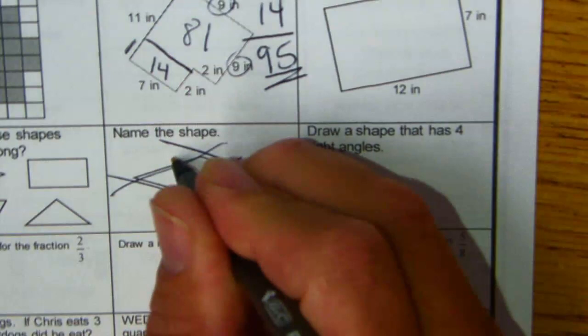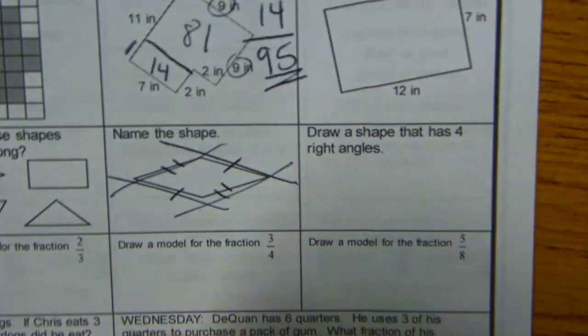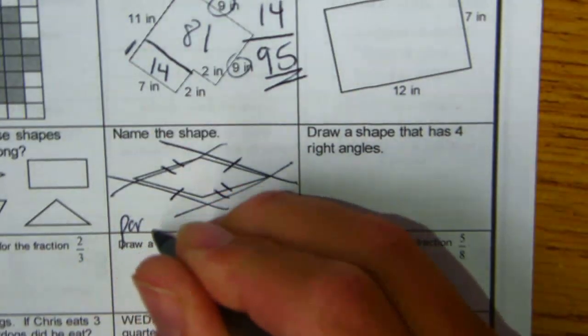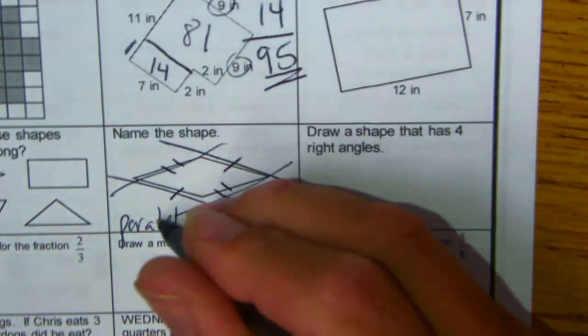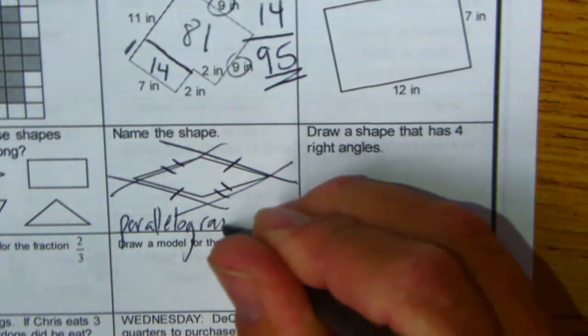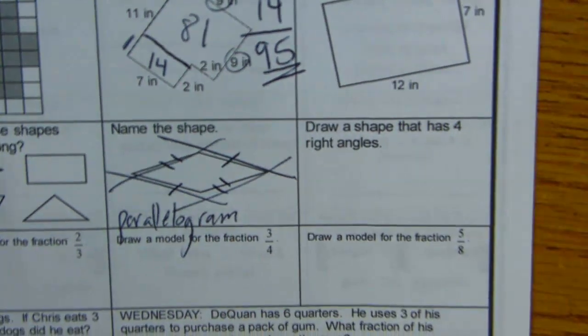Parallelogram has two Ls. All right, what else is true of this? All the sides look to be the same length on this one.